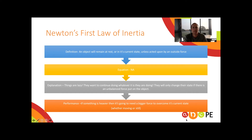E for equation. Now most of the biomechanical principles you'll learn this year will have an equation attached — it might be force equals mass times acceleration, or impulse where force times time equals impulse. But for some of the simpler principles, like Newton's first law of inertia, there isn't an equation, so we're going to skip that step this time.